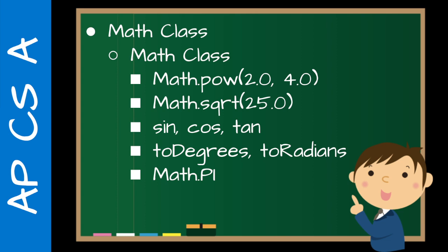There are other methods too: sine, cosine, tangent, and methods to convert between radians and degrees. These are not on the AP exam and not part of that AP subsection, but students may find them useful for writing software to help in their other classes — for example, using these functions to help with math homework.